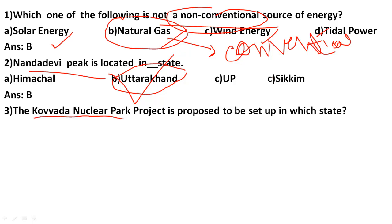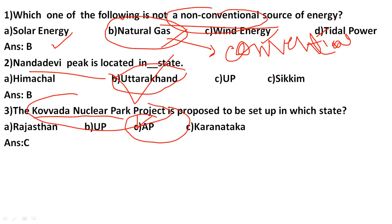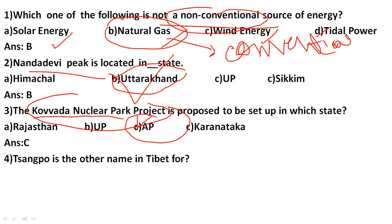The Kovara nuclear power project is located in which state? Options are: Rajasthan, UP, AP, Karnataka. The correct answer is option C, that is Andhra Pradesh. Kovara nuclear power project is in Andhra Pradesh.